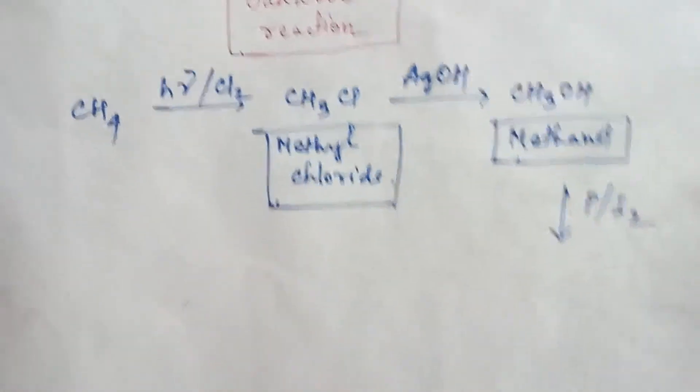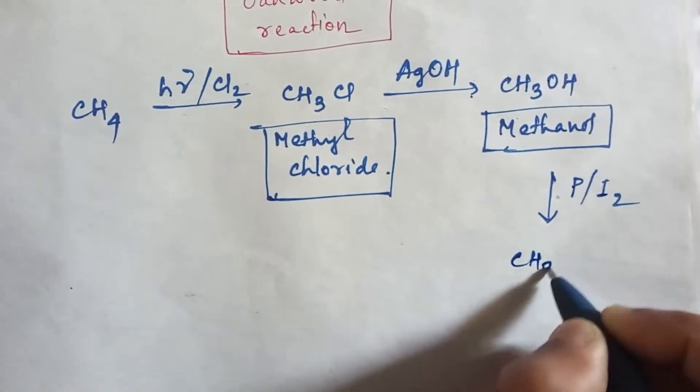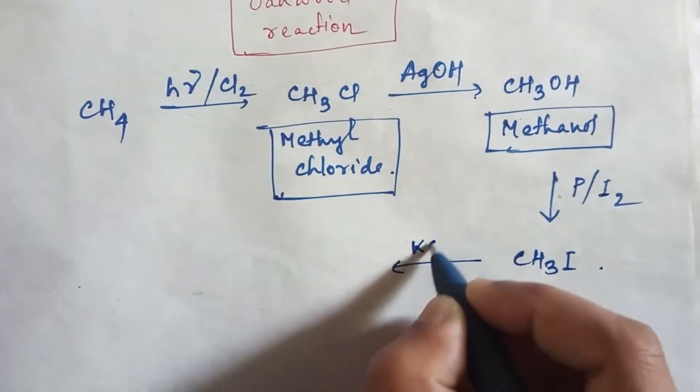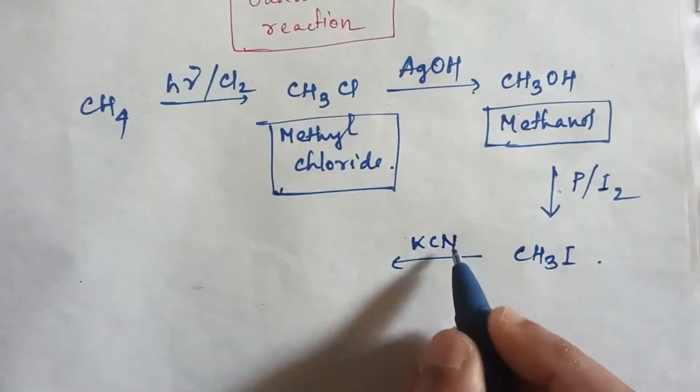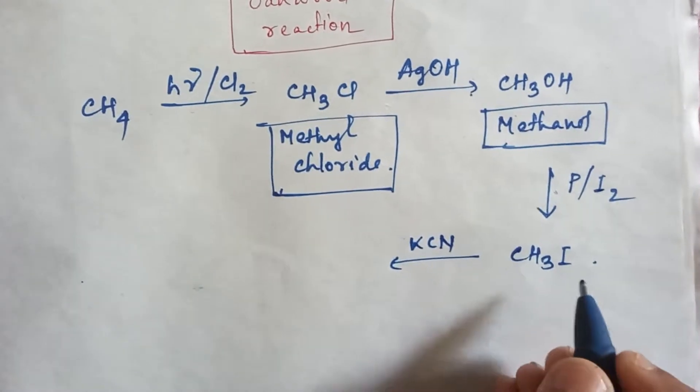Now in methanol, if you add phosphorus and iodine, then you will get methyl iodide. Then add KCN. The CN will replace this iodine, which is a good leaving group, and you will get CH3CN.